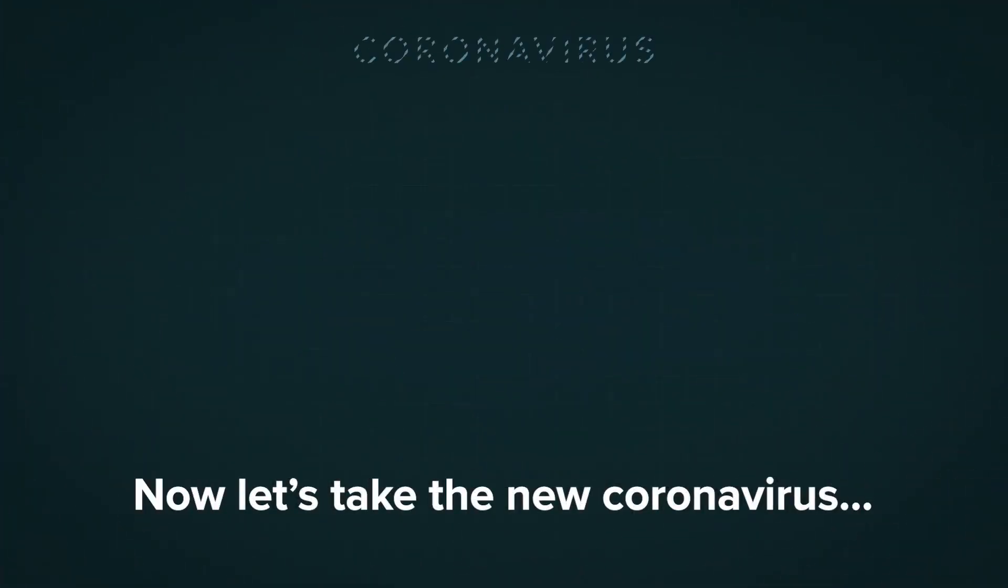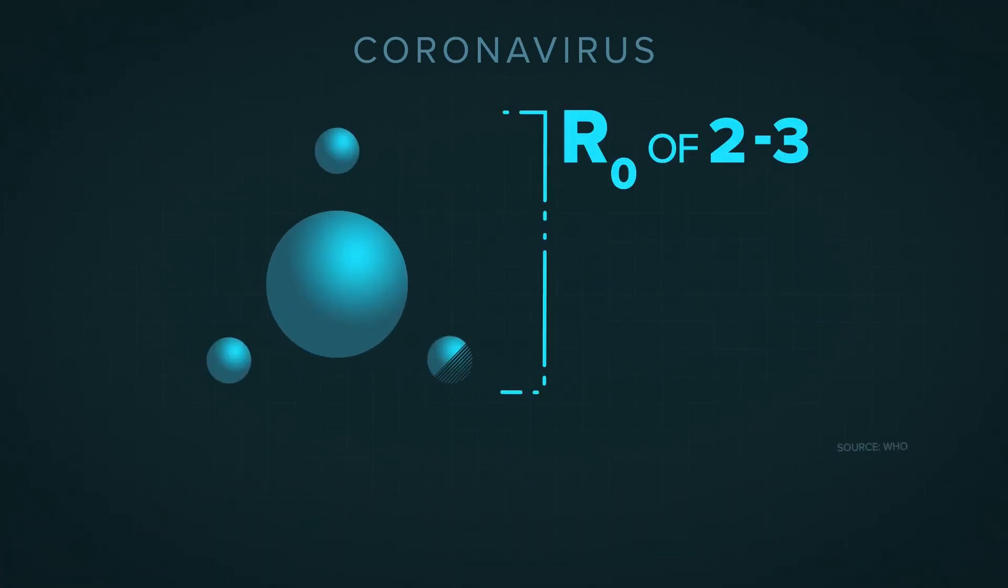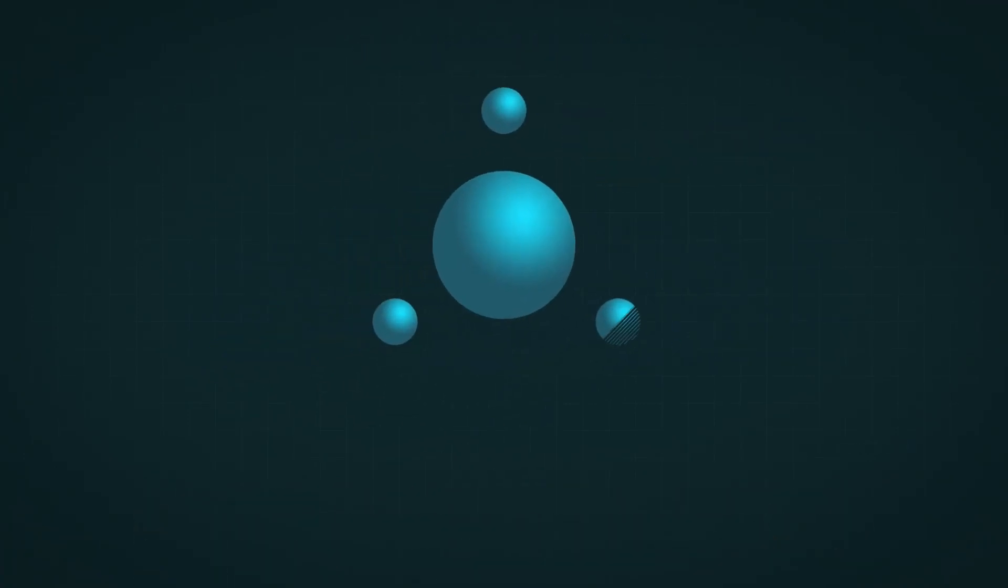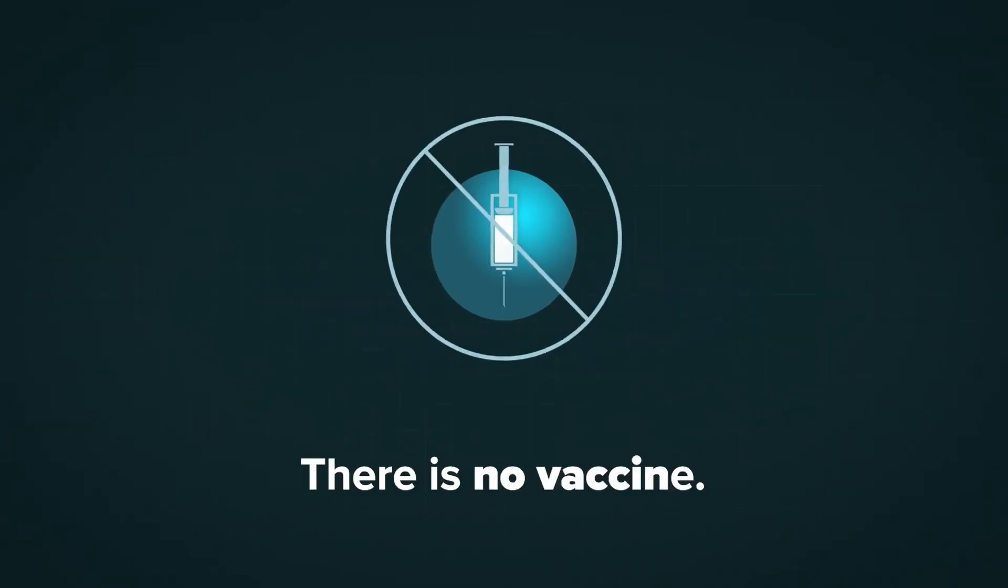Now let's take the new coronavirus. Its R-naught of 2 or 3 suggests it's not as harmful. But as of now, no one has protection. There is no vaccine.